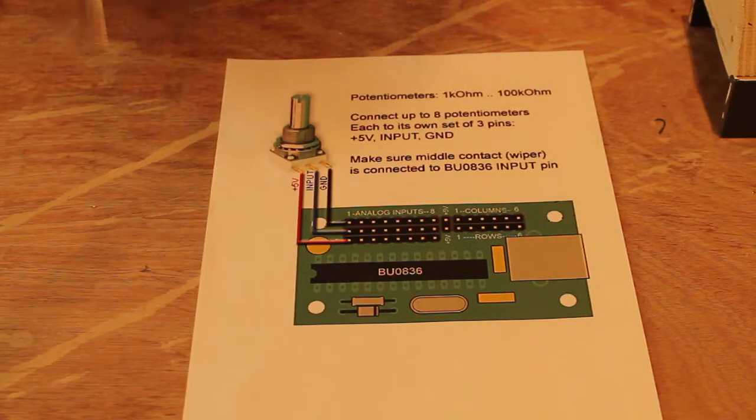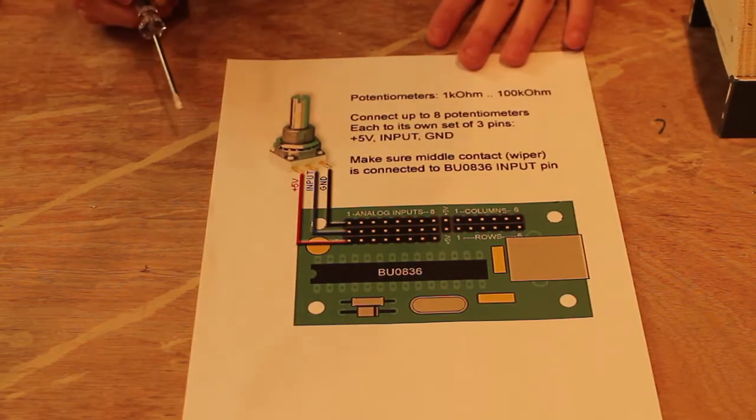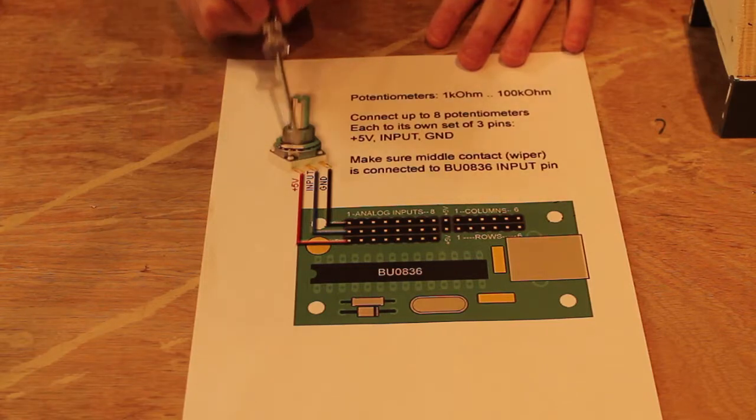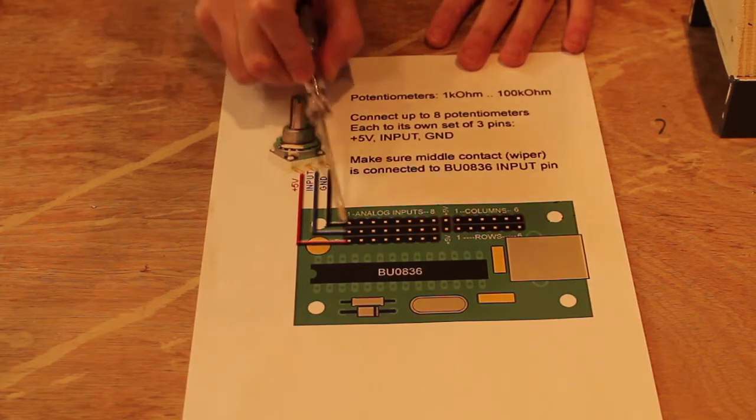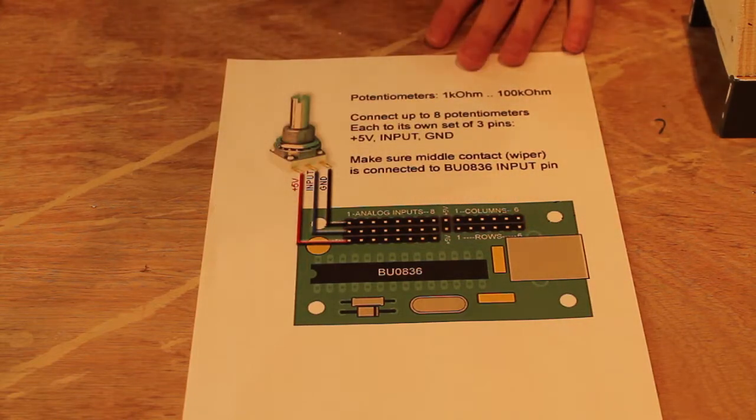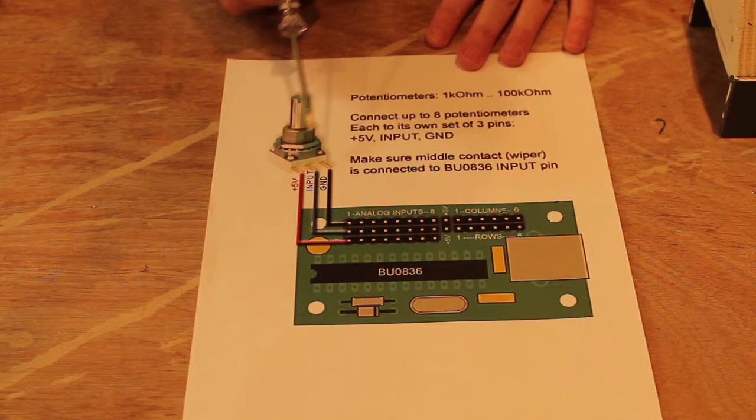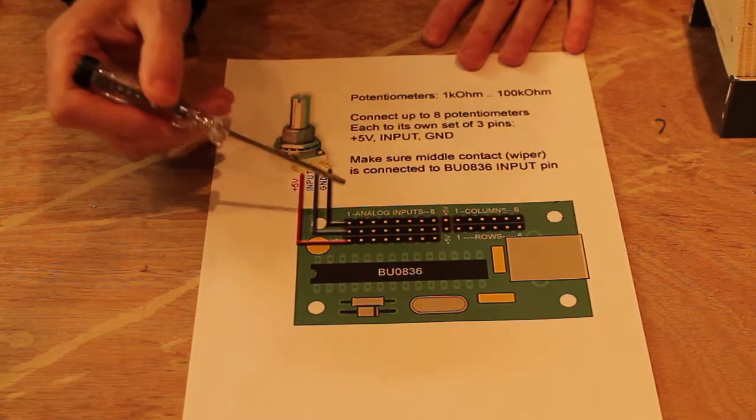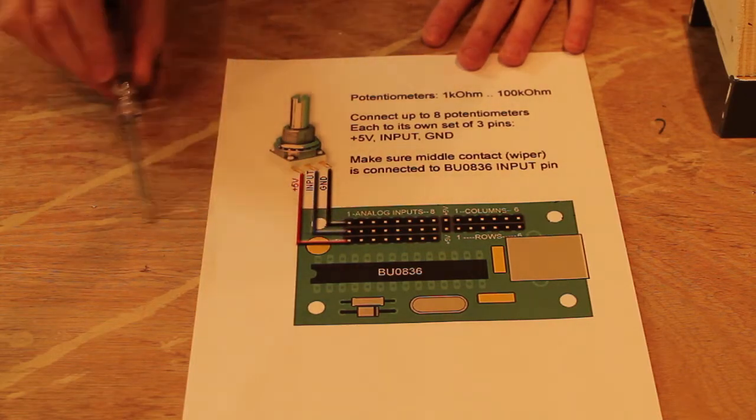So connecting a potentiometer, this is the idea, it's very simple. You have three pins, each potentiometer with three cables that will go to the card. One is for the ground, one is for the input, and the other one is for the power. Each wire goes connected to a pin.